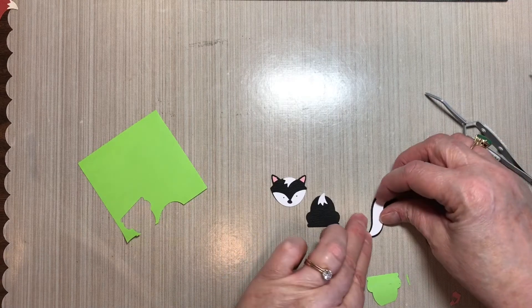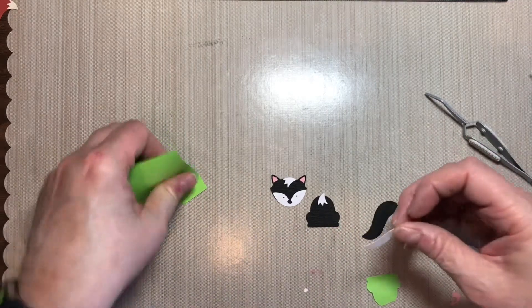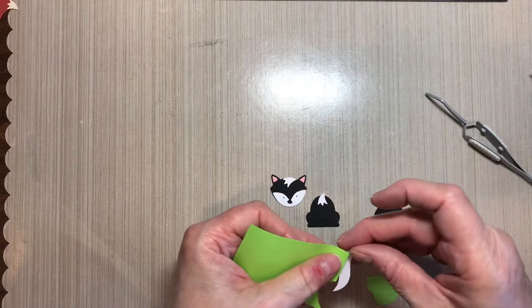You know, I think that I want to have the stripe a little bit narrower on him. So back to the punch.